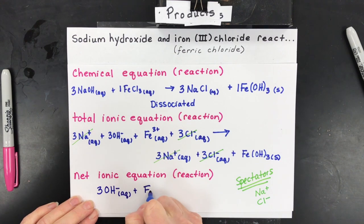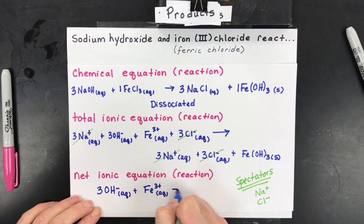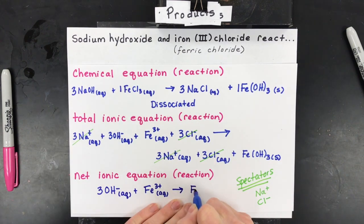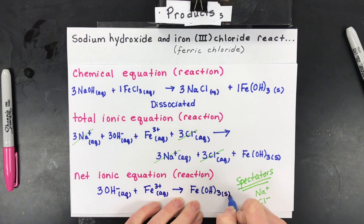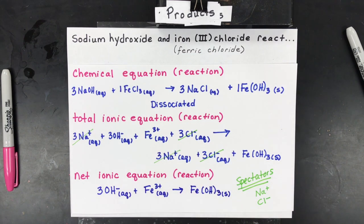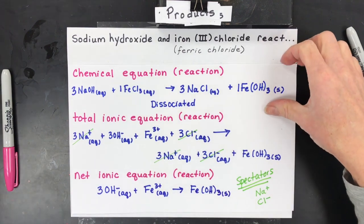So when I rewrite my what's called my net ionic I'm only going to include the ions that create the chemical change. So here are the two ions that are going to create what is called a precipitate. The iron hydroxide the iron three hydroxide you could also call this ferric hydroxide makes the precipitate. So now's a good time for us to see this as a reaction but before that I want to show you one more thing.